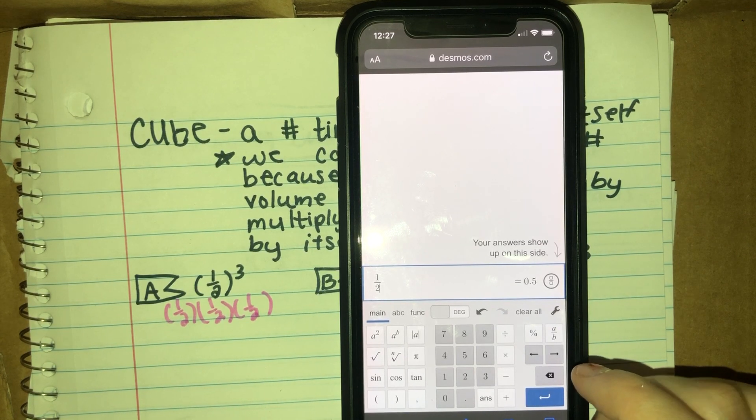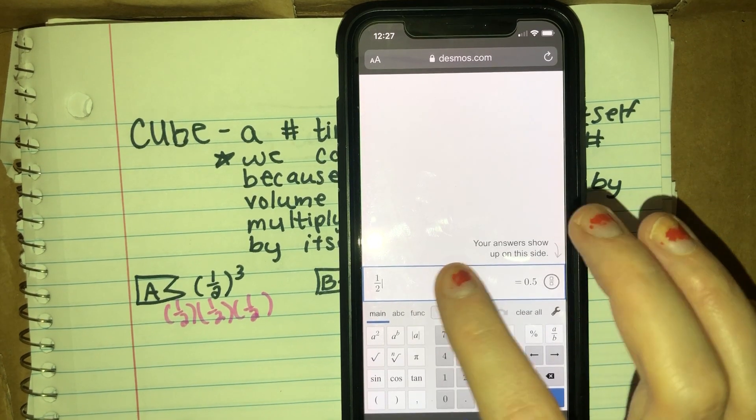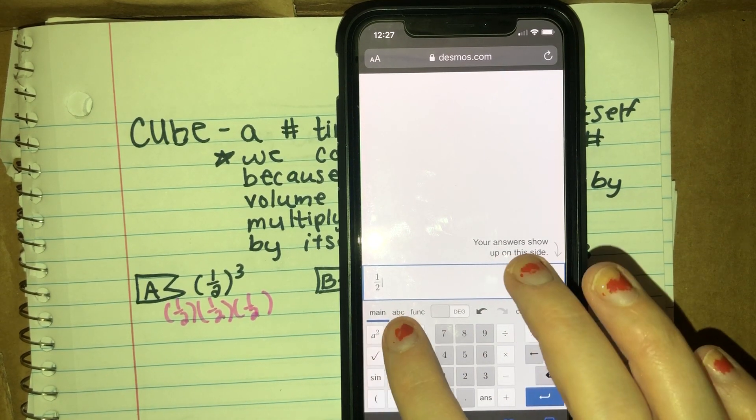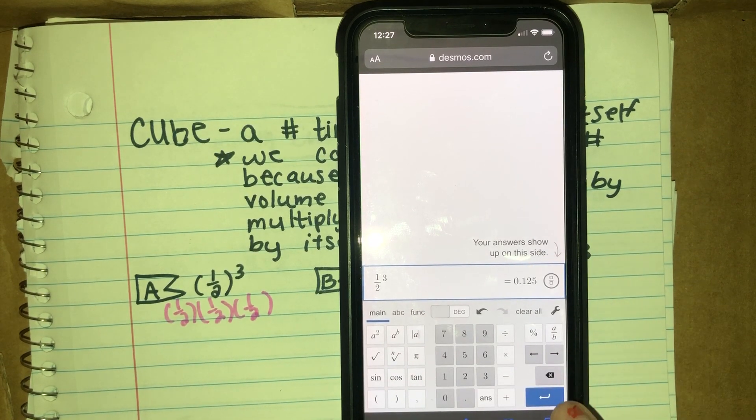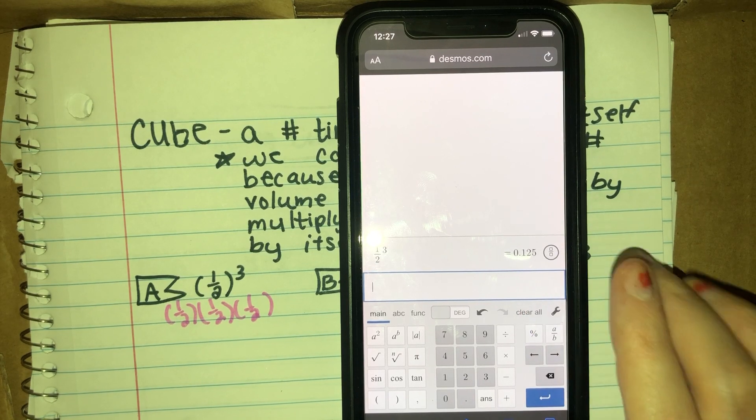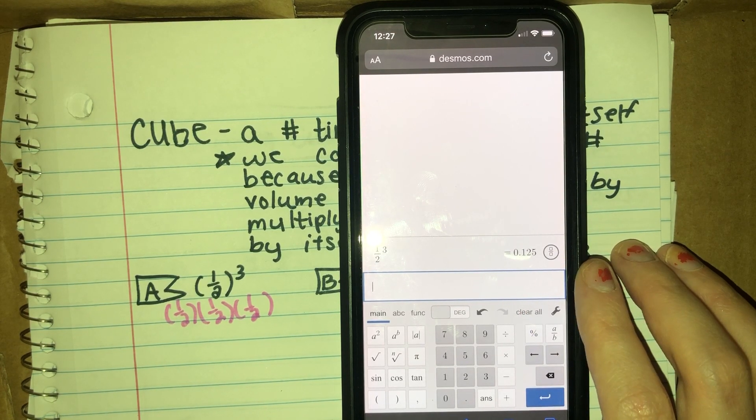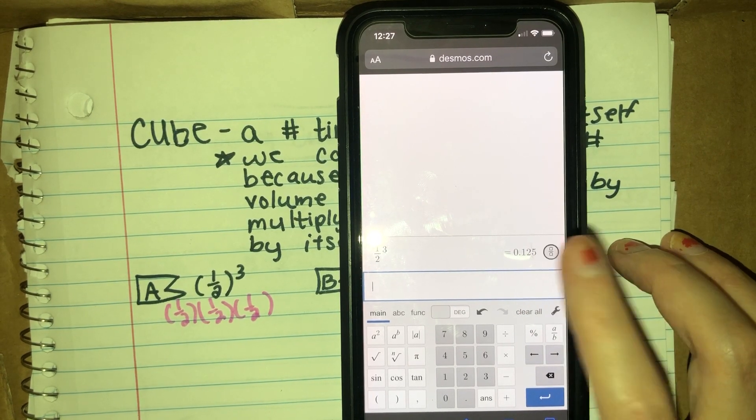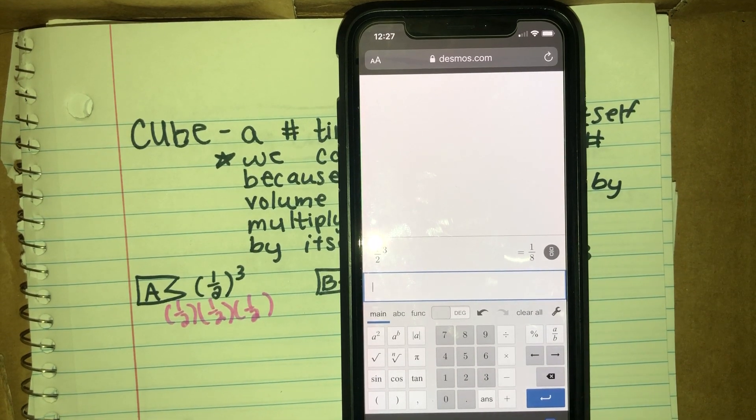...and then you're going to raise that to the third power. Right here, it gives you the answer in a decimal. We don't love that. If it gives you a fraction, we want a fraction answer, so go ahead and press that, and you should get 1/8.